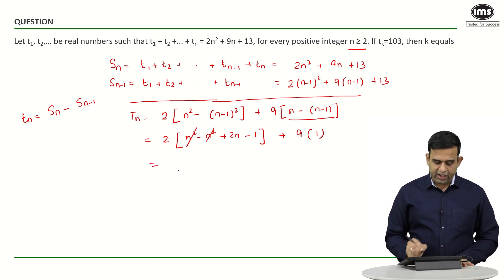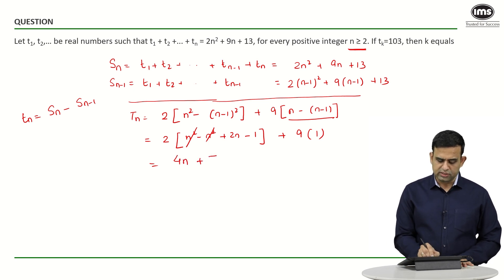So what do I get finally? I get nothing but 4n - 2 + 9 becomes 7.